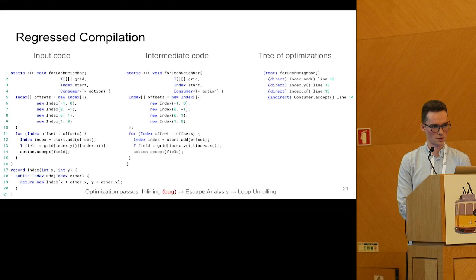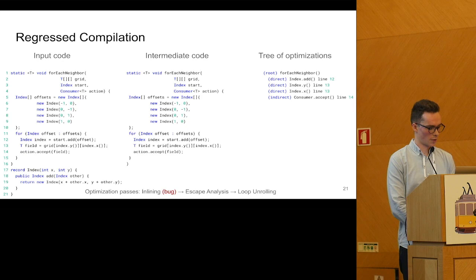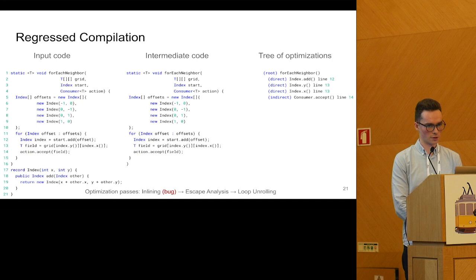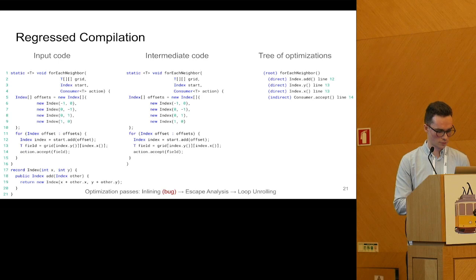Now let's consider some regression scenario. Suppose that there is a bug in the inliner — that will lead to a different compilation outcome. We will fail to optimize all this code and record it as a different tree, which we can later compare with the baseline compilation. We'll go through three phases: inlining, escape analysis, and loop unrolling.